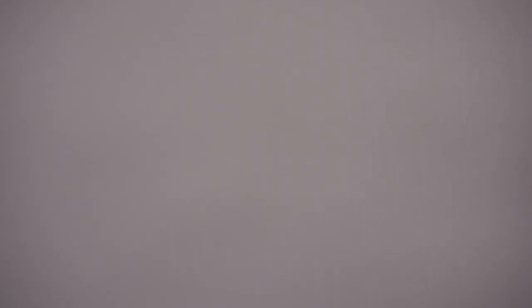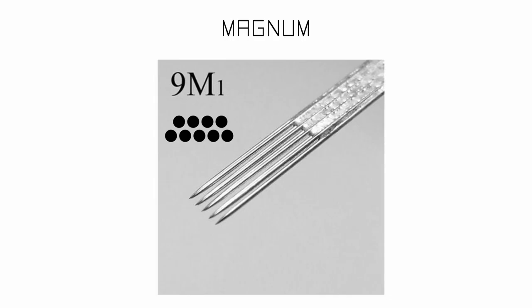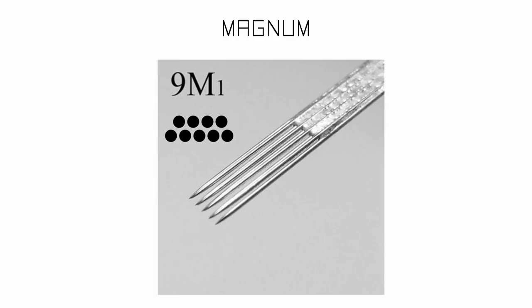Our next needle is the magnum, abbreviated M or M1. This needle is typically used for packing solid colours and for shading, but it will be slightly harder to use for soft shading as it may leave unwanted marks with its sides because of its shape. The needle grouping is made of two separate rows that intersect each other, and all the needle tips are the same length, giving it an almost square-like shape — ideal for packing solid colour in well-defined areas.